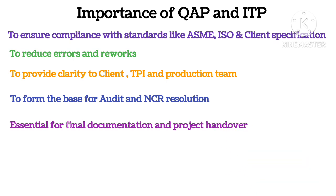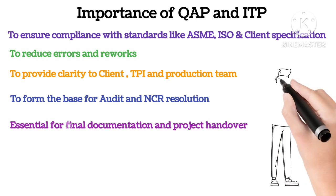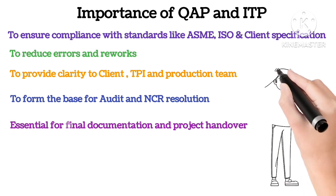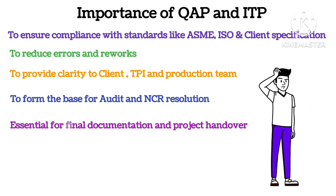Let's say you are fabricating a pressure vessel without an ITP. How will you track whether welds are inspected by RT or UT, or whether PMI is required before or after welding? Hence, the ITP and QAP are very crucial documents.